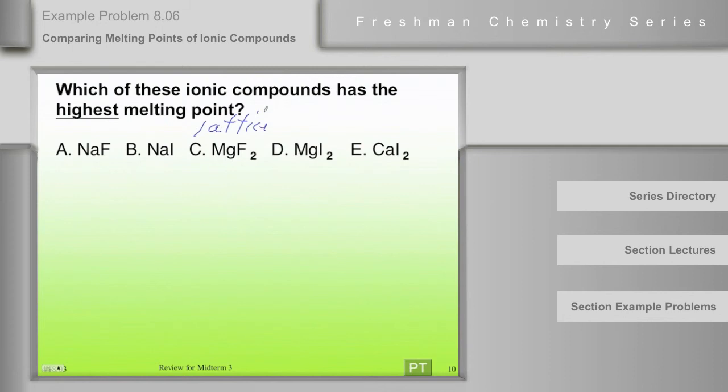And we said the lattice energy is proportional to the product of the charges, charge plus times charge minus, divided by the sum of the radii of the ions.